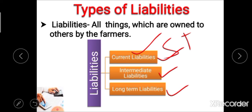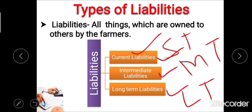Second type is intermediate liability. These intermediate liabilities can be repaid within the period of three to five years, and all medium-term loans are included in intermediate liabilities. The last type is long-term liability. These long-term liabilities can be repaid within the period of five to more than 20 years, and all long-term loans are included in long-term liability.